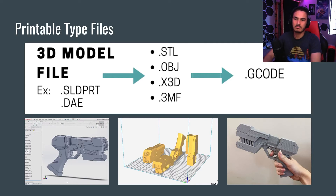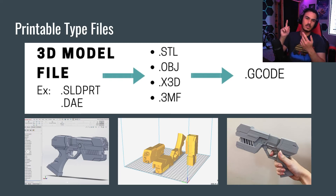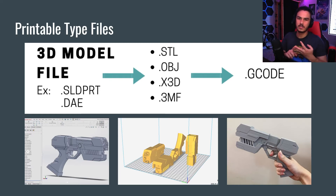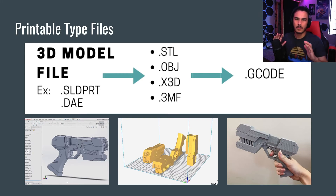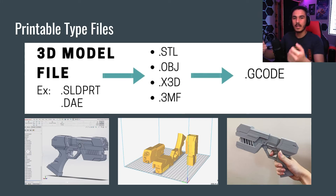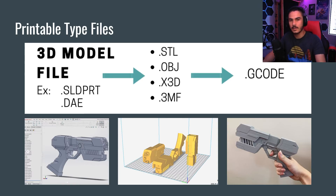You can take any 3D modeling program that you're using — Fusion 360, Solidworks, Inventor, Rhino — any program you can model anything in, as long as you can export that model as any of these four file types shown here.